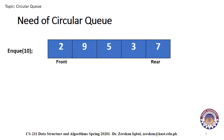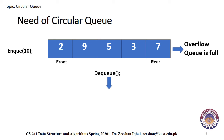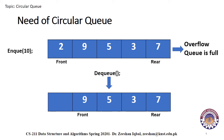Now if you again call the enqueue function it will show that the queue is full. After the enqueue operation, if we call the dequeue operation, the front value will be incremented and it will point to 9, so 2 will become a garbage value. Now again if we call the enqueue function it will again show that the queue is full, because the enqueue condition checks if rear equals max minus one. As the rear is again pointing to the max minus one index, that is 4, we can see that we have space available but memory appears to be wasting.